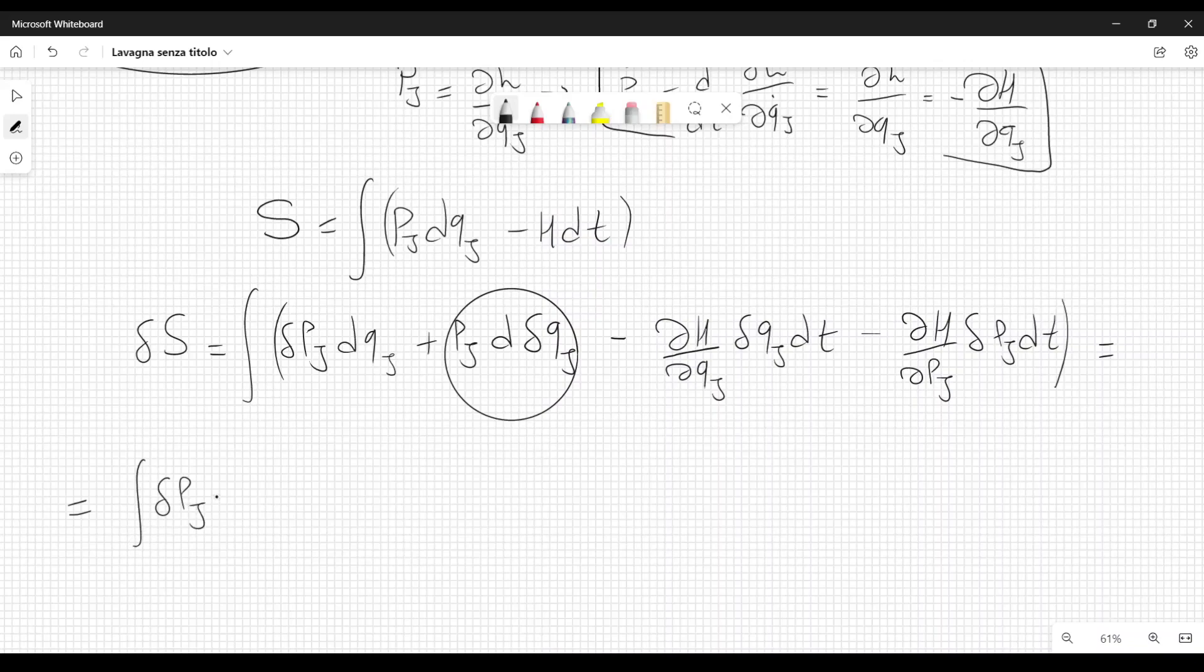Integral delta p j dq j will be the same. Then when we integrate this term, we get minus differential of p j times the variation of q j. Then here we have the same things,